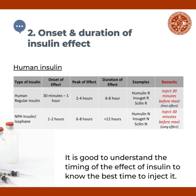Aside from the generic name, one also has to know the onset and duration of the insulin's effects. For human regular insulin, the onset of effect is 30 minutes to 1 hour, the peak effect is at 2 to 4 hours, and the duration of effect is 6 to 8 hours. Examples of human regular insulins are Humulin R, Insulatard R, and Scilin R. These are supposed to be injected 30 minutes before a meal.